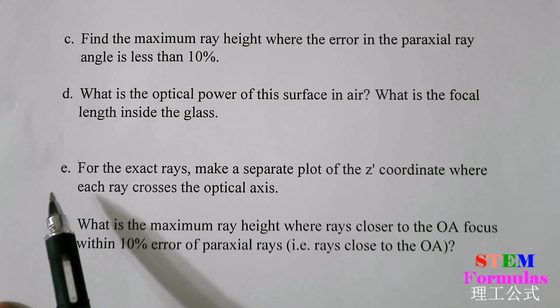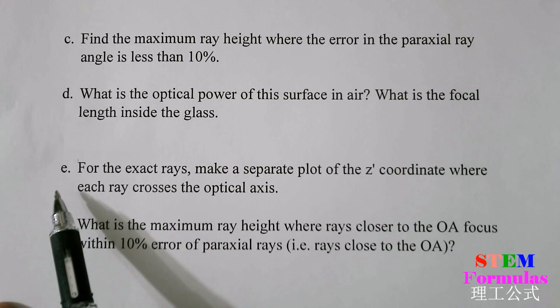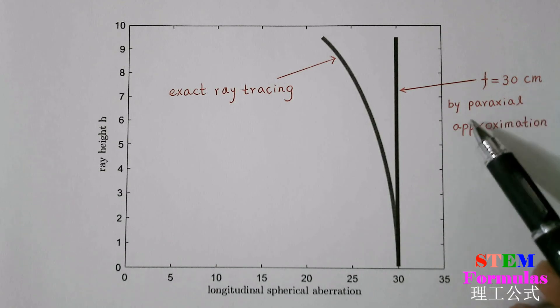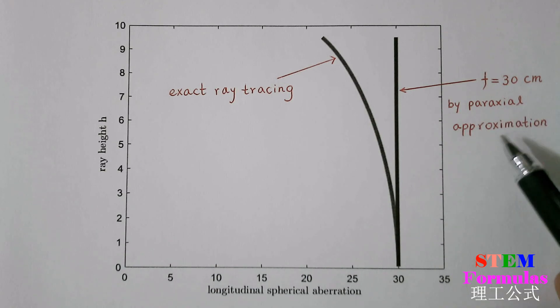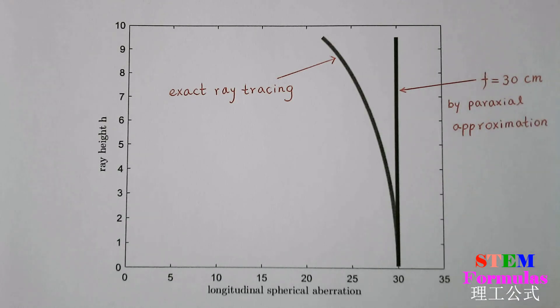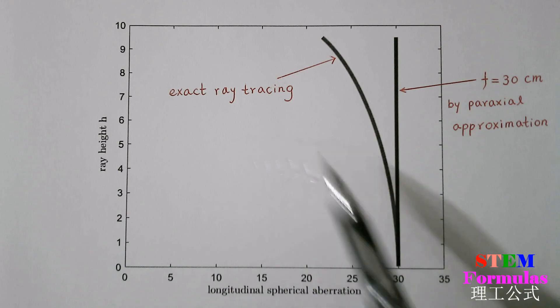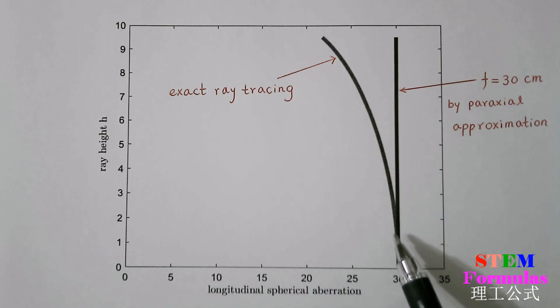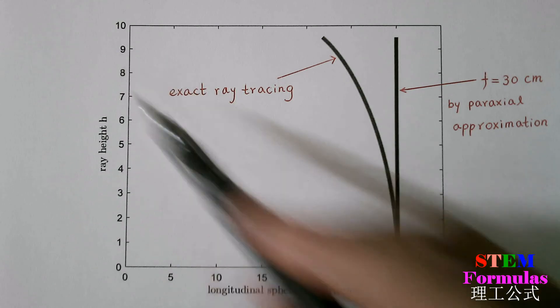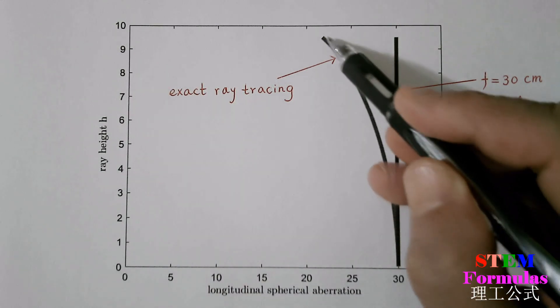For question E, we will show our plot in the next page. Here is the result. We have found the focal length is 30 cm by paraxial approximation, this vertical line. For the exact ray tracing, we find the focusing point is closer to vertex as the height goes higher and higher. This curve is the exact ray tracing curve.